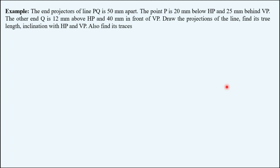As the question states, the end projectors of a line PQ are 50 mm apart. Point P is 20 mm below HP and 25 mm behind VP. The other end Q is 12 mm above HP and 40 mm in front of VP. Draw the projections of the line, find its true length, inclination with HP and VP, and also find its traces.